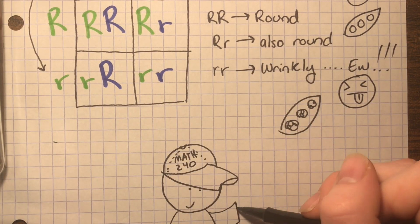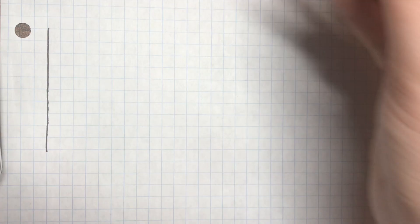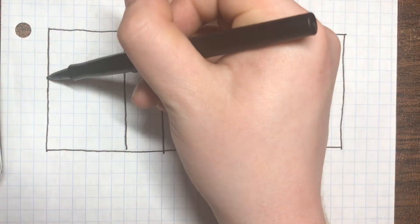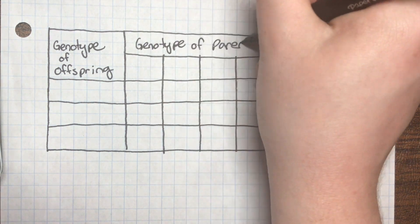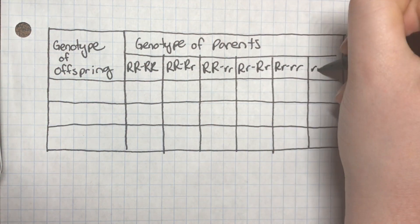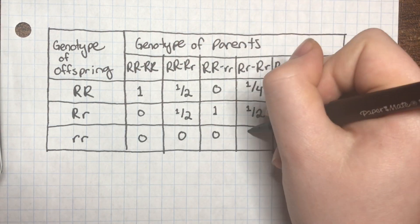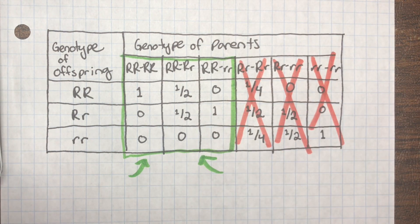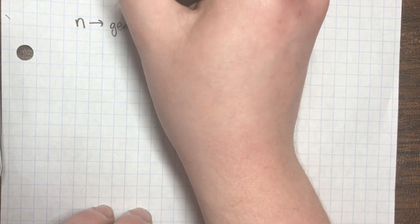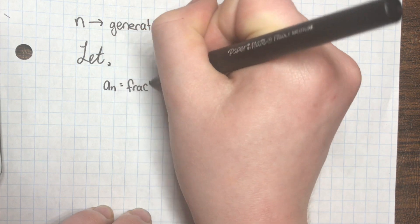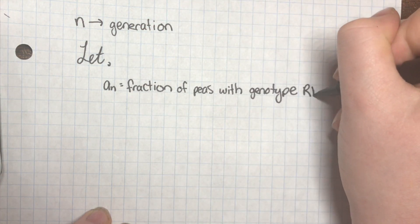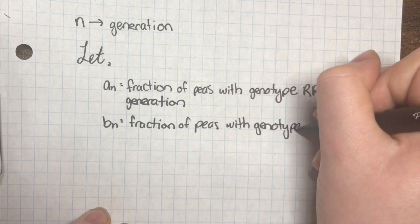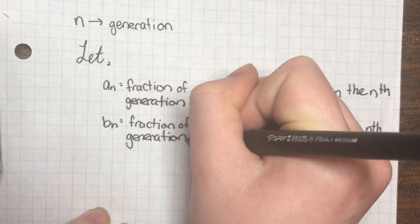Now with the biology facts squared away, let's put on our linear algebra hats. First, let's make a table of all the possible combinations of parents and their potential offspring — essentially a table of all the results of all the possible Punnett squares. The farmer says he's only breeding to purebred round peas, so one parent is always going to be big R big R. Let n represent the generation number, and let a_n equal the fraction of peas with genotype RR in the nth generation, and b_n be the fraction with genotype Rr.